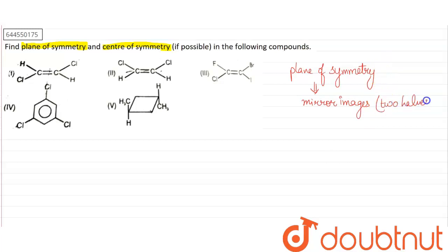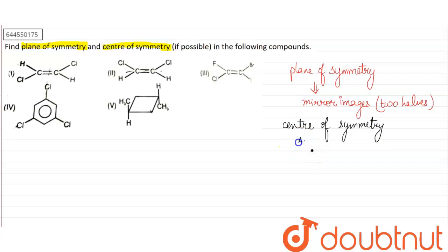For the center of symmetry, we take the center of a compound. For example, we have A, B, A and B. We take the center of the compound and go in all directions to find if we have the same group present in the opposite direction. While going to one side we have B, and going the opposite side we also have B; going one side we have A and the opposite side we have A — so center of symmetry is present.